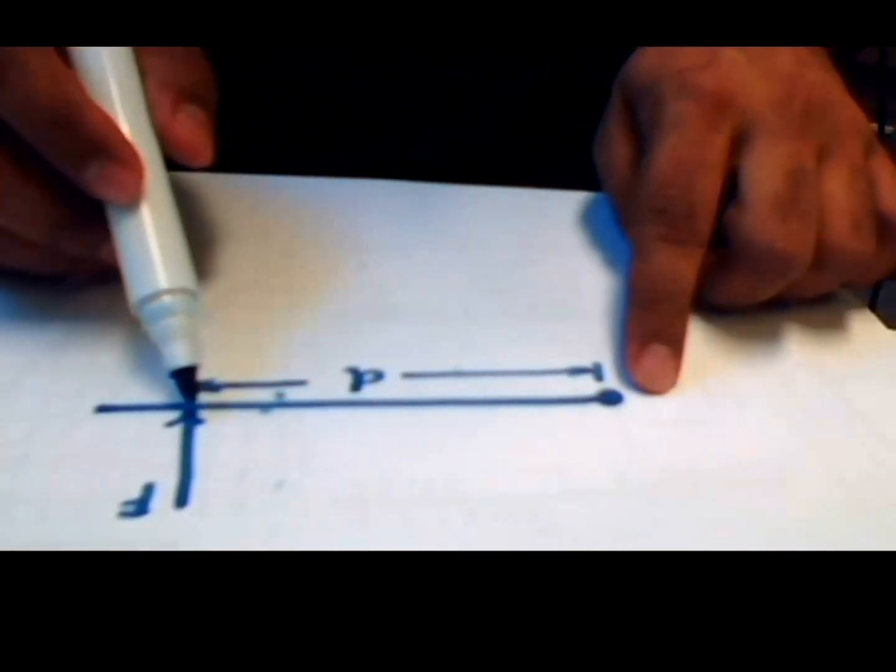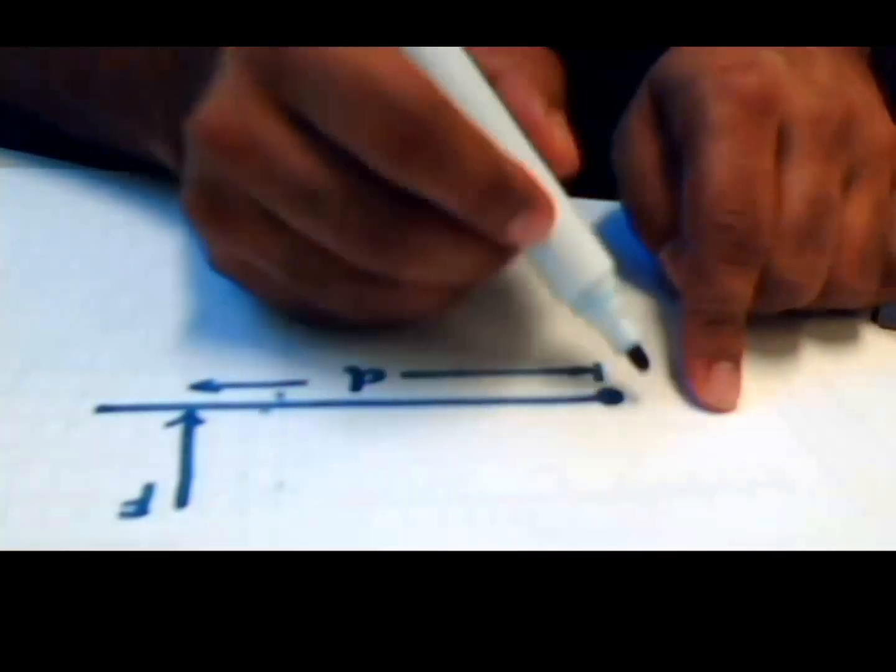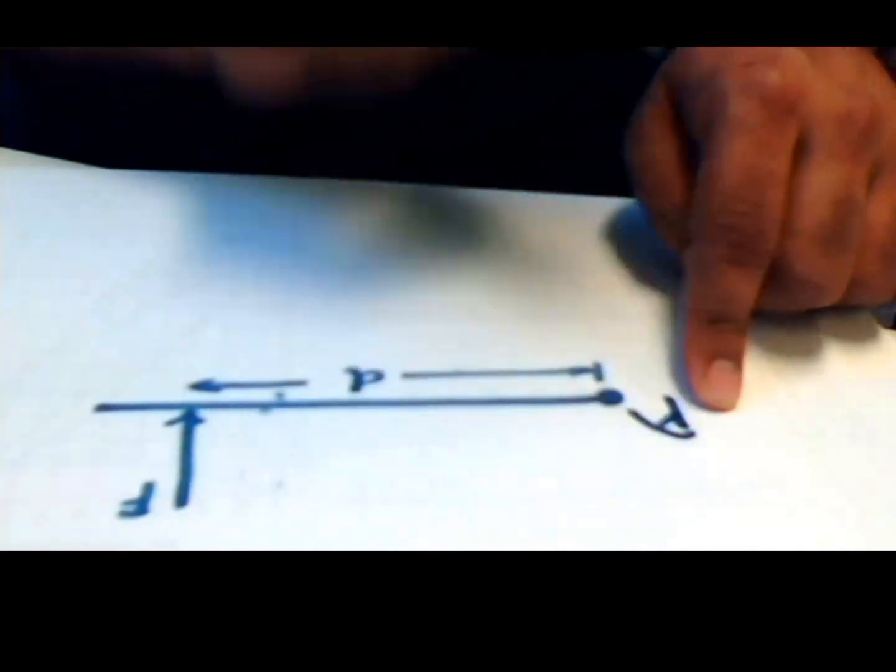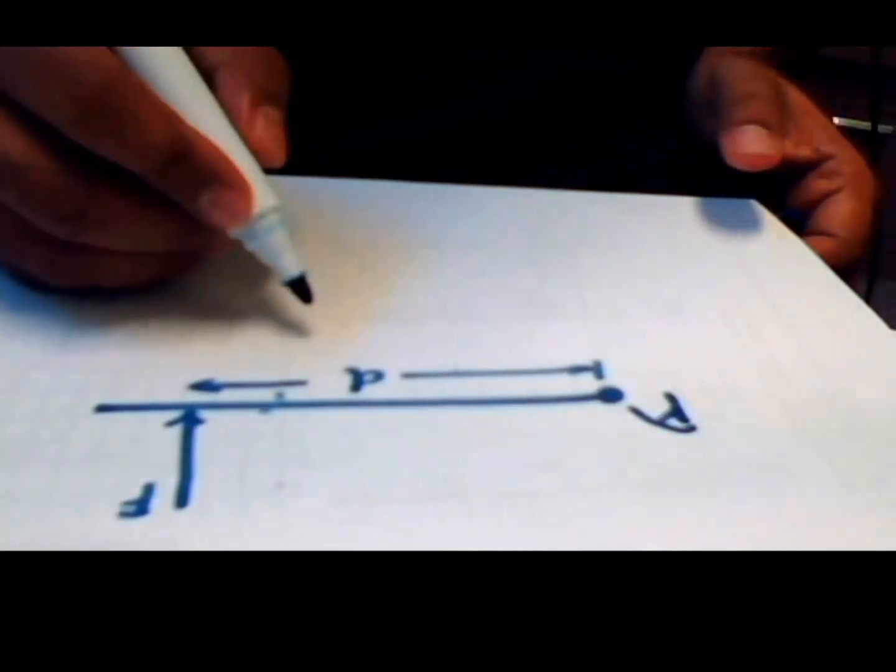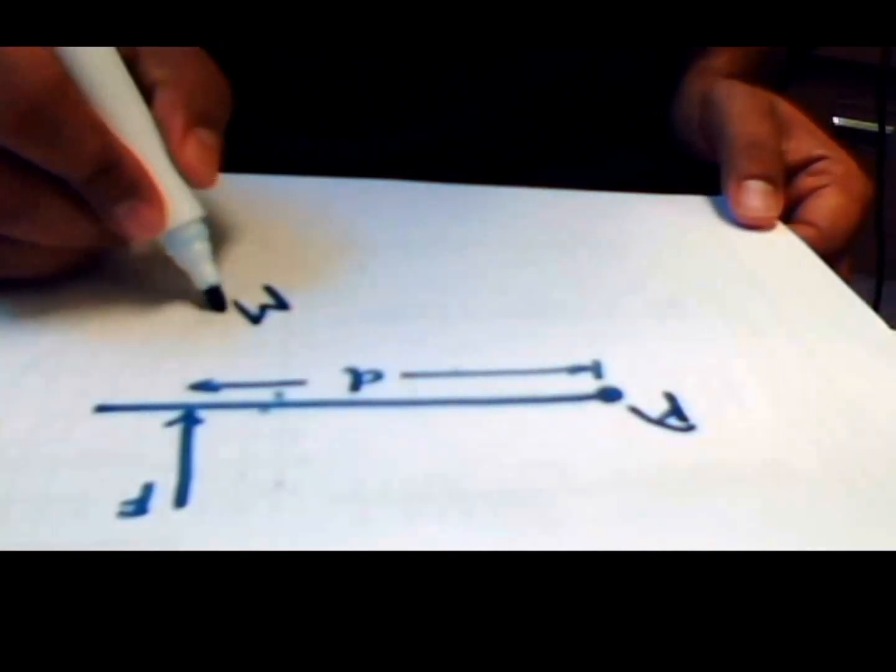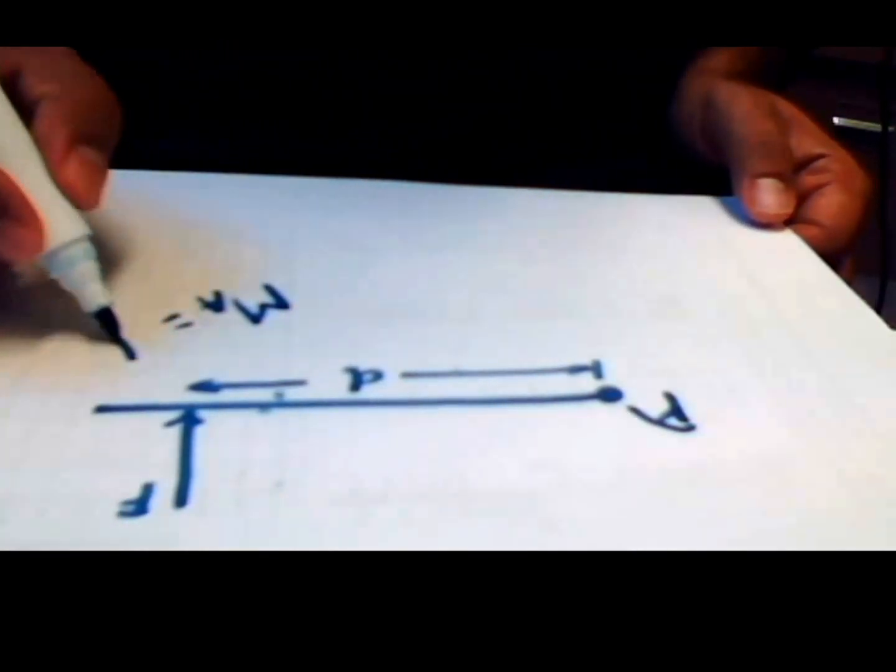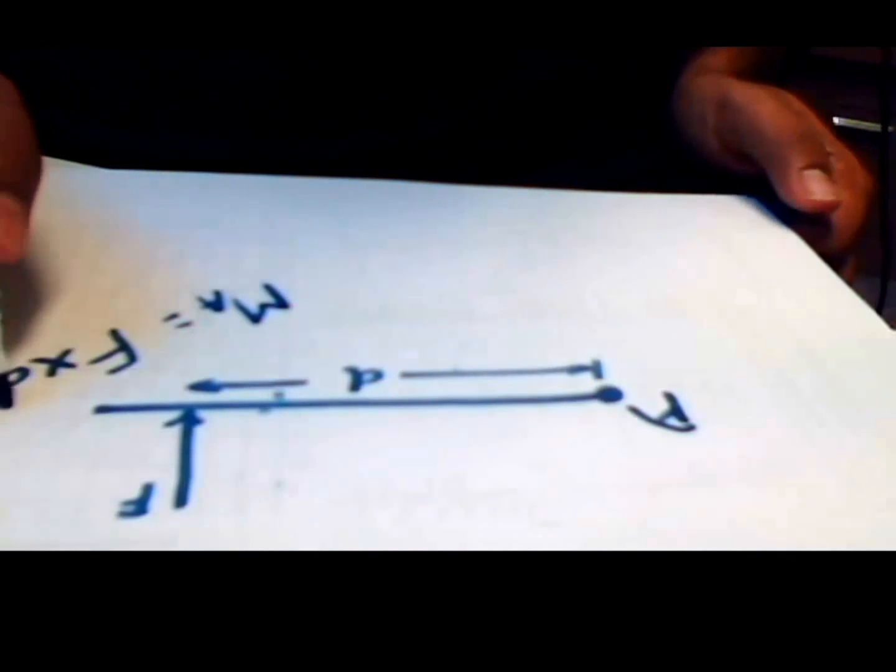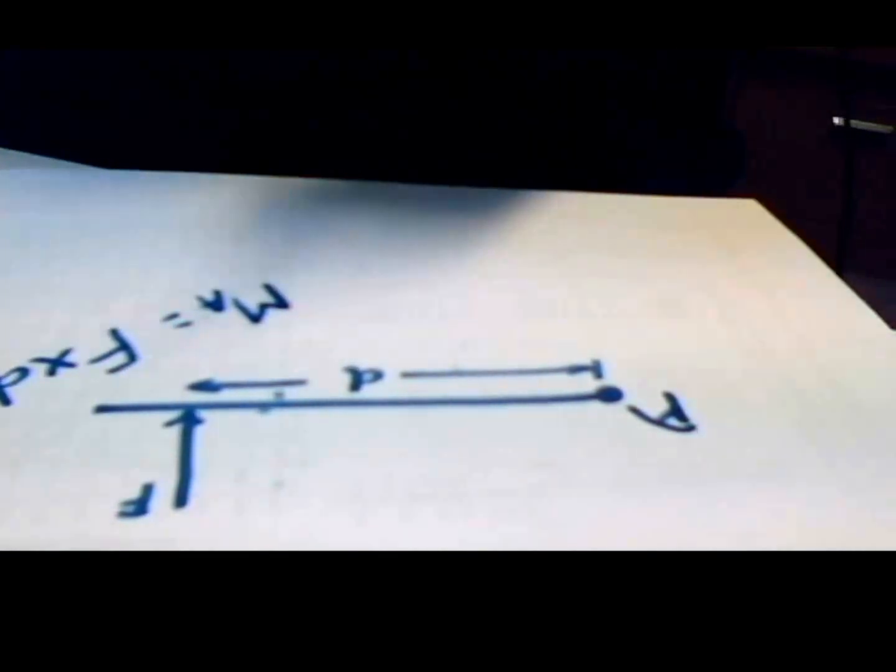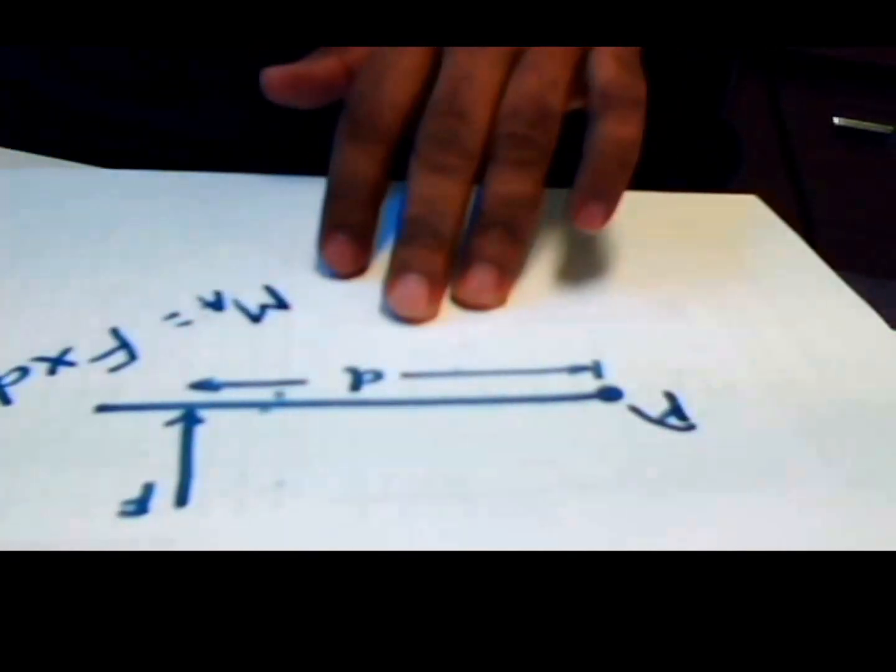How to calculate the moment? Moment is always force times distance. In this case, we're trying to calculate a moment about point A, which means moment at A equals force times distance. From this figure, we can see...